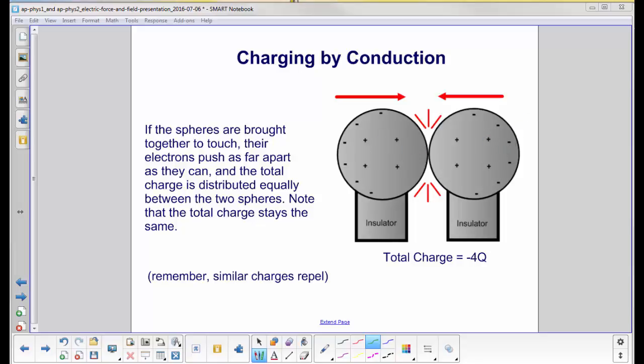Note that the positive charges, which represent the nuclei, don't move. They're fixed in position. So these electrons push as far away as possible, which means they're evenly distributed between the two spheres.